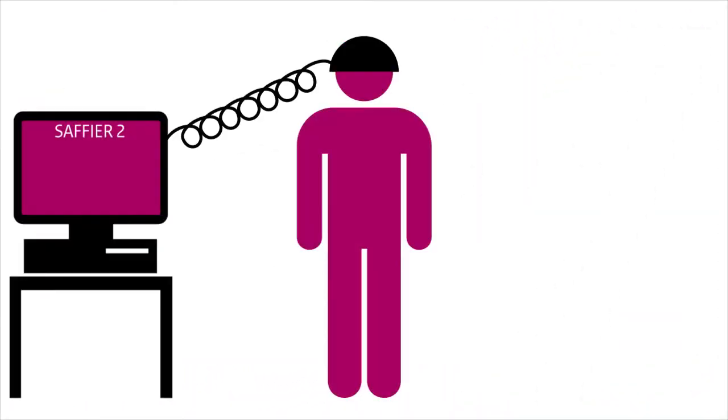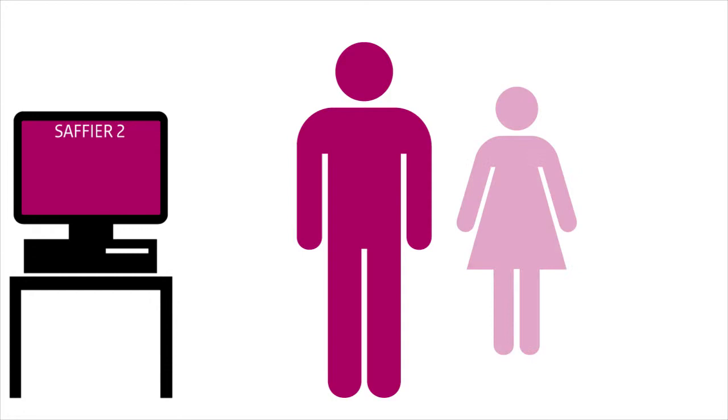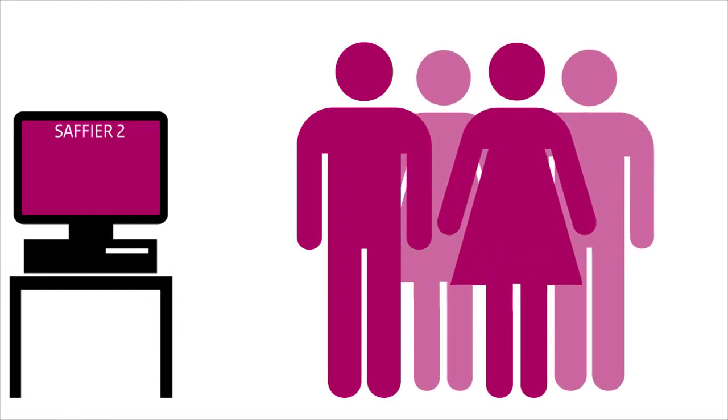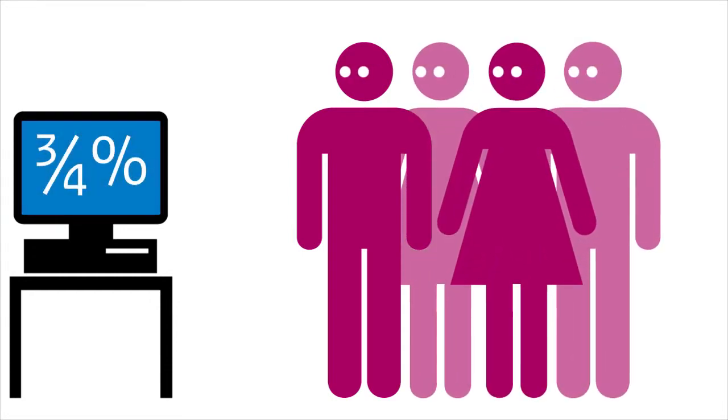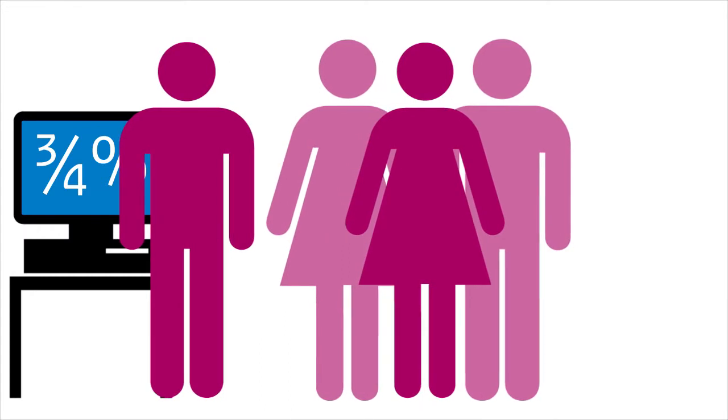However, CPB is not a slave to its models. In the fifth step in the projection process, therefore, calculation results are checked by various specialists. This may lead to the model being overruled by CPB researchers, and to them adjusting one or more of the projection figures.